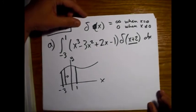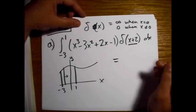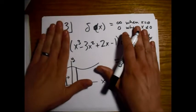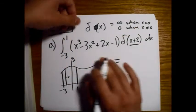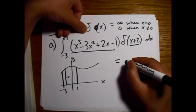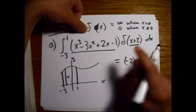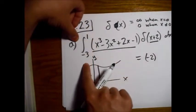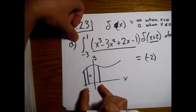So, long story short, when we evaluate this integral, all we have to do is take this piece inside here and we just plug in a minus 2. And this only works because our limits of integration encompass this point.